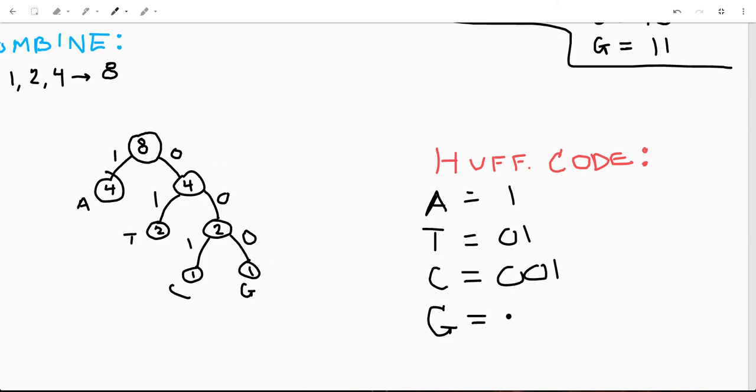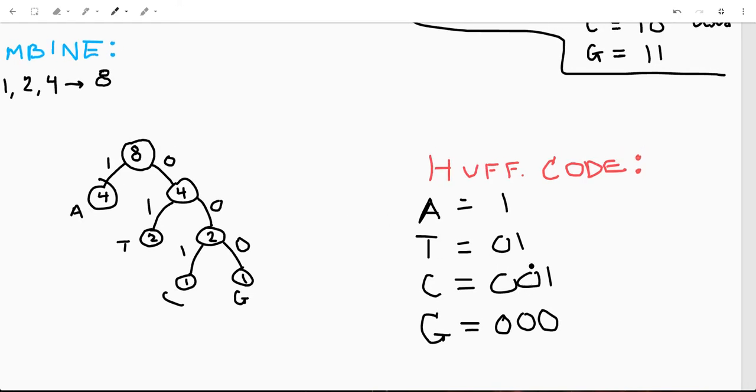Zero, zero, zero to get to G. And you'll notice that the most frequently occurring characters have the shortest encodings, and the least frequently occurring have the longest encodings.